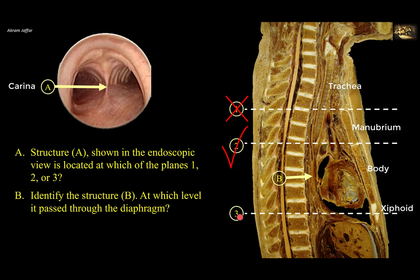Level 3 is much lower, almost at the level of the right dome of the diaphragm. Level 2 is called the transverse thoracic plane, passing anteriorly through the sternal angle and posteriorly through the intervertebral disc between T4 and T5 vertebrae. Structure B is the esophagus. As mentioned, both the esophagus and the trachea start in the neck, but the esophagus is more posterior. It is a muscular tube that continues from the superior mediastinum into the posterior mediastinum, then passes through the diaphragm at the level of T10 — the esophageal hiatus.